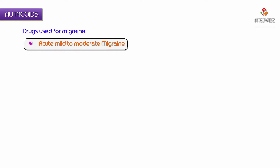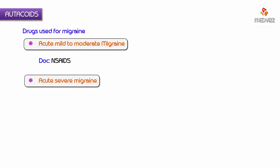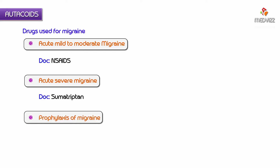For migraine, the drug of choice for acute mild to moderate migraine is NSAIDs (non-steroidal anti-inflammatory drugs). For acute severe migraine, the drug of choice is sumatriptan. The drug of choice for prophylaxis of migraine is propranolol — a beta blocker considered as the drug of choice for migraine prophylaxis.